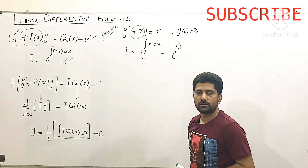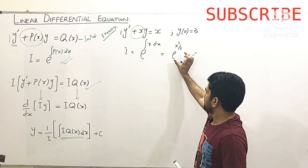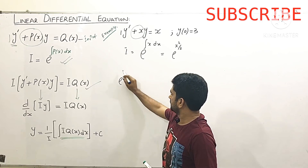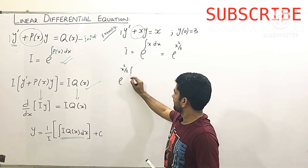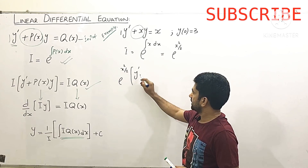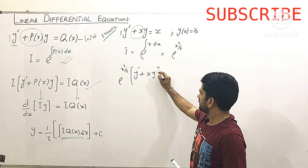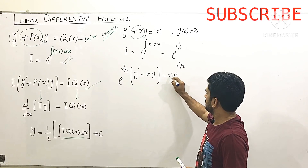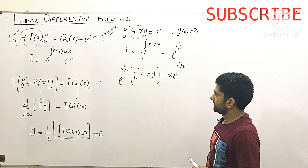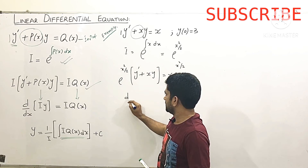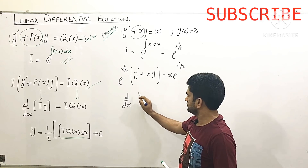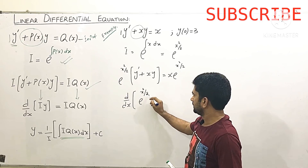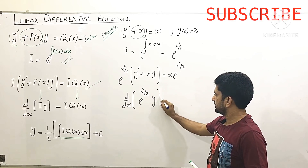We know that the integral of x is x²/2, so our integrating factor is e^(x²/2). Now we multiply the complete equation by this integrating factor, giving e^(x²/2)·(y' + xy) = e^(x²/2)·x. In the next step we close the left-hand side by writing d/dx[e^(x²/2)·y] equals the right-hand side as it is.